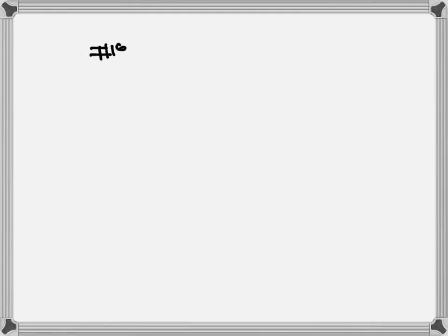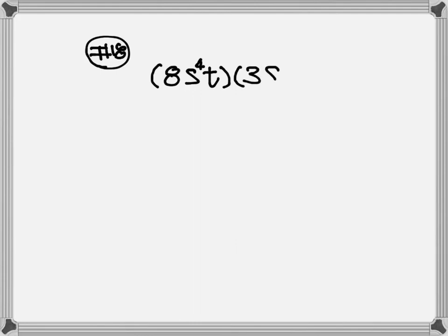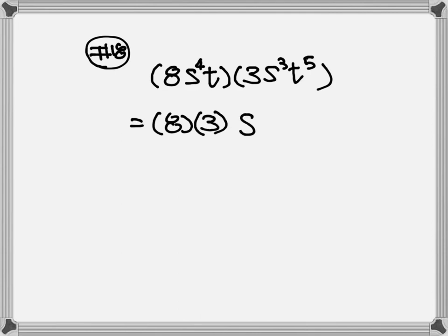Now let's look at number 18. Here we have 8s to the fourth power times t, times 3s to the fifth power t to the fifth power. Again, you multiply number times number — so 8 times 3. You multiply s: bases are the same, combine the exponents. Multiply t times t, write down one t. If you don't see any exponent, that's a 1, so it will be 1 plus 5. So the answer is equal to 24s to the ninth, t to the sixth.